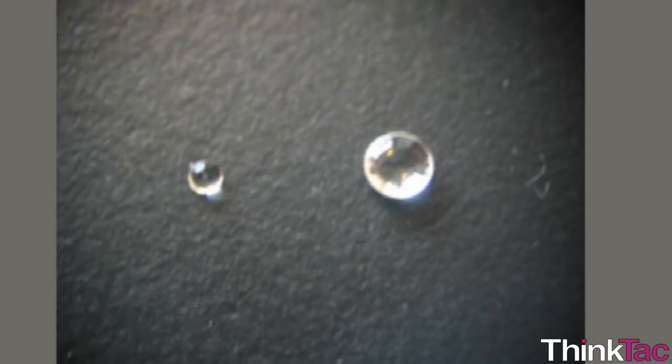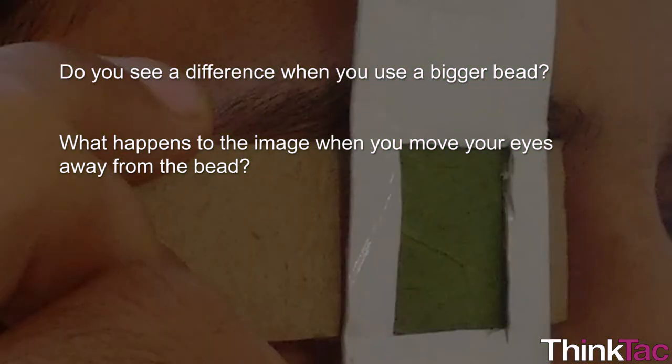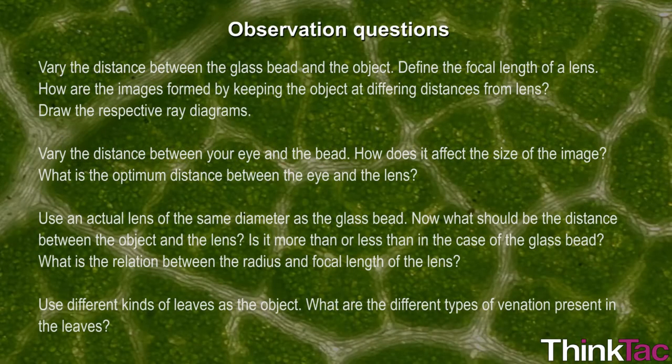Another variation that you can make is by using beads of different sizes to assemble the microscope. Now observe the same objects. Do you see a difference when you use a bigger bead? What happens to the image when you move your eyes away from the bead? There is a set of observation questions accompanying this activity guide. We encourage you to have a look at them and try to understand what they imply.